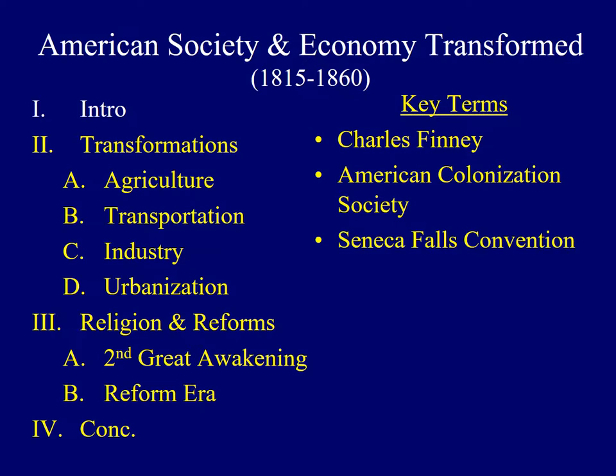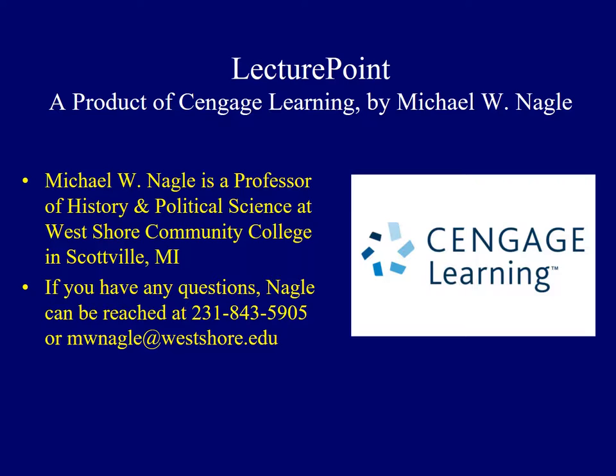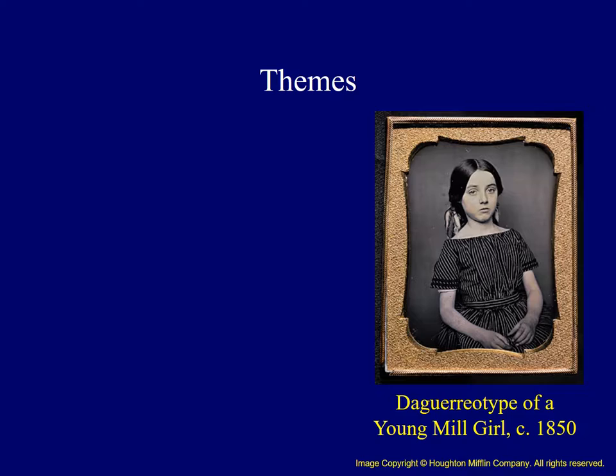Hello and welcome to lecture number 11. Today's topic will address many aspects of American society from approximately the end of the War of 1812 to the Civil War. The presentation will explore several transformations in American society including changes in agriculture, transportation, industry, and growing urbanization. We will also see how American society was characterized by another religious awakening followed by a reform era where many groups of individuals worked to improve American society.